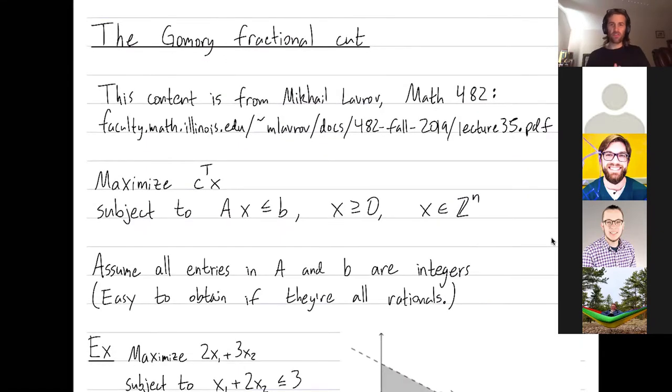So this content is from the notes by Mikhail Larov for an analogous class on linear programming. One thing I should say is the basic setup is maximizing c transpose x subject to Ax ≤ b, with x non-negative and we're looking for integer solutions. For the Gomory cut, you need all entries in A and b to be integers. You can obtain that if they're just rationals, just by clearing the denominators.